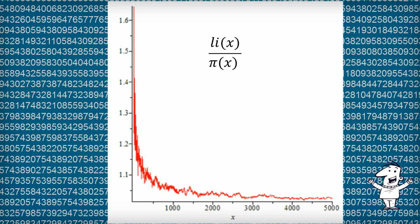Gauss didn't have a proof that li(x) divided by π(x) gets closer and closer to 1. But mathematicians have since proven this to be true. li(x) is a very good approximation to π(x).